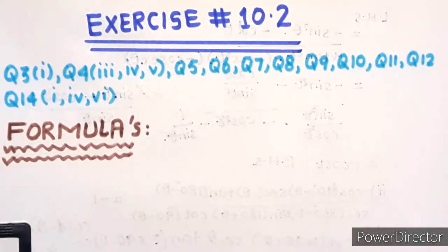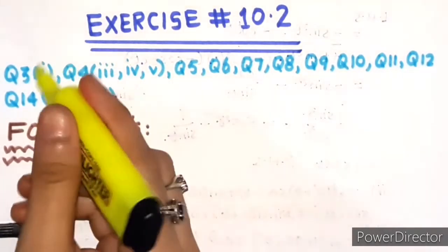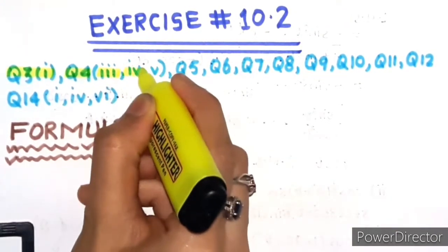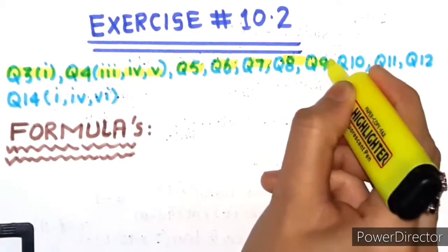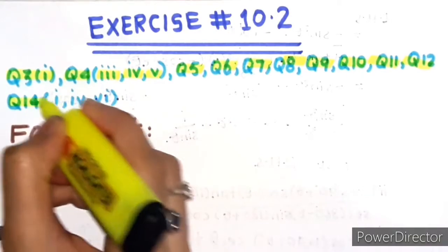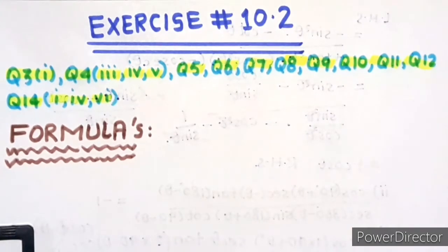Assalamu alaikum, I hope you all are doing well. Welcome back to my channel. Today we will study Exercise 10.2, the reduced questions for the examination of 2021. The first question is question number 3 part 1, question number 4 parts 3, 4, and 5, question numbers 5, 6, 7, 8, 9, 10, 11, 12, 13, 14 parts 1, 4, and 6 are included. We will solve it one by one, so let's start our video.